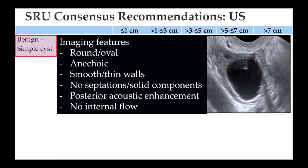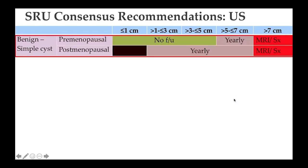Simple cysts are usually round or oval, anechoic, with smooth or thin walls, no septations, no solid components, posterior acoustic enhancement, and no internal flow. In a young woman, up to five centimeters, nothing needs to be done. Beyond that, depending on size, either yearly follow-up up to seven centimeters, or for lesions more than seven centimeters, MRI or surgery. In a post-menopausal woman, up to seven centimeters warrants yearly ultrasound follow-up, and larger than that, MRI or surgery.